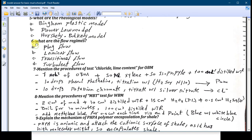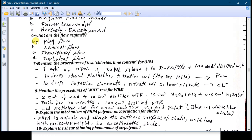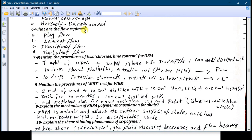Number six question: what are the flow regimes? The flow regimes that we are dealing with are four main flow regimes: the plug flow, the laminar flow, the transitional flow, and turbulent flow. To distinguish between them, it depends on something called the critical velocity and the Reynolds number.